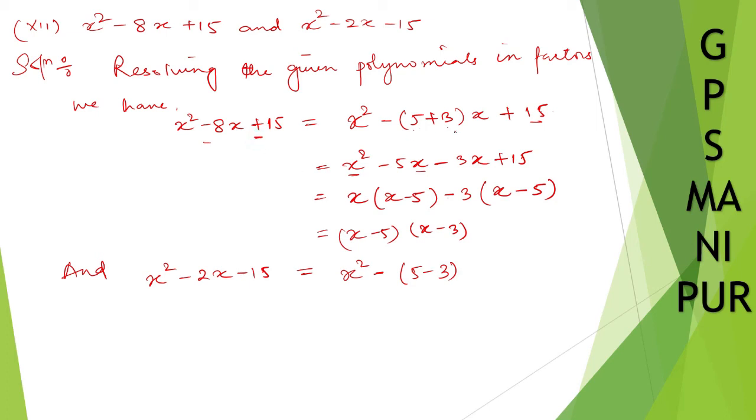Here it has a positive sign, so we are going to do plus to both numbers. So here it is a negative sign, so we are going to do minus. So (5-3)x: minus 5x minus 3x minus 15.